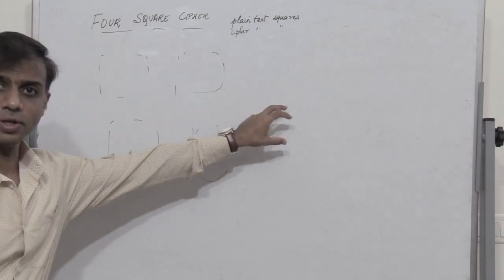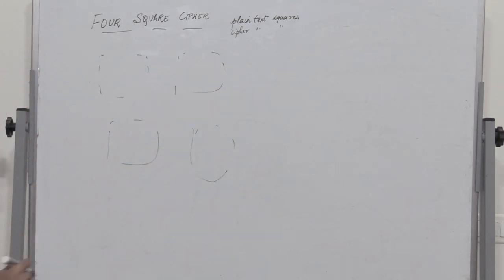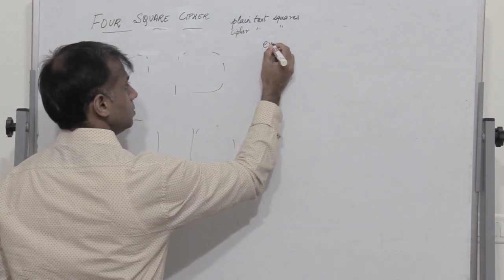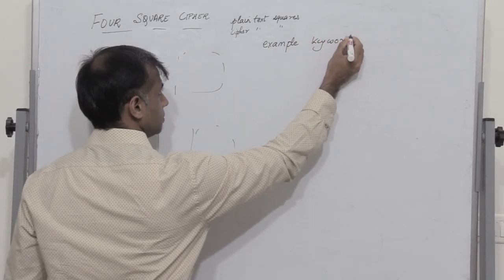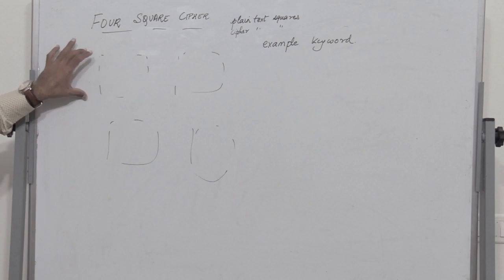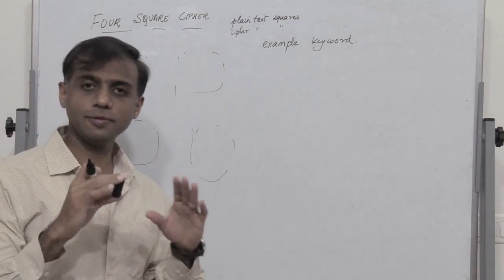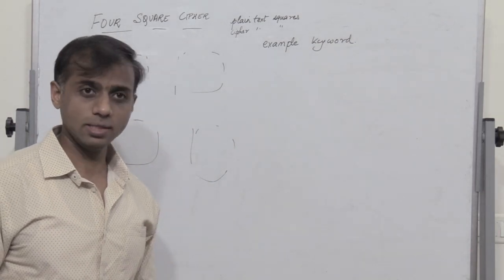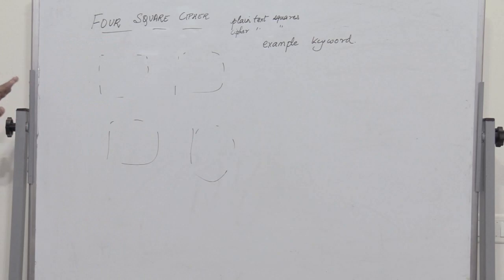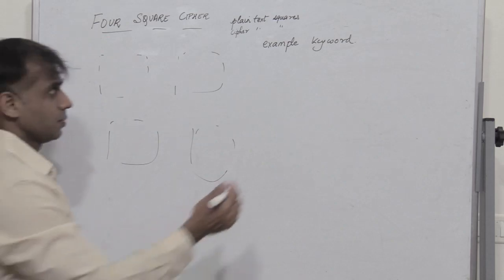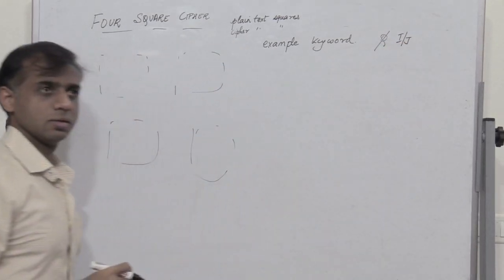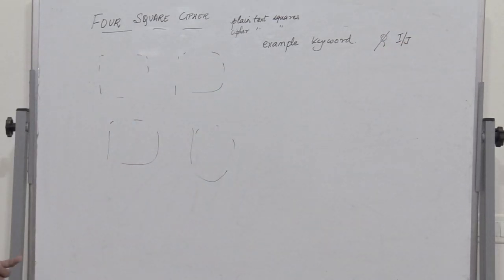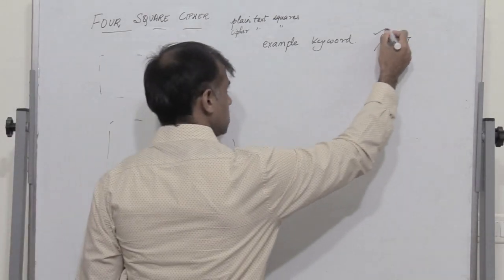In order to get the ciphertext we need two keywords. Let me consider two keywords: 'example' and 'keyword'. Each square is a five-by-five matrix and we need to write all the alphabets of English in it. Since there are 26 alphabets, we shall eliminate the alphabet Q — or alternatively write I and J in one box. We follow one of these approaches, so here we skip Q.